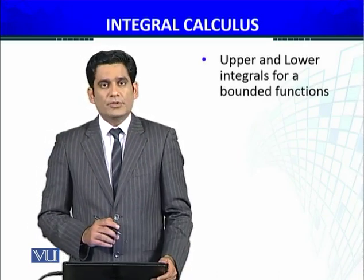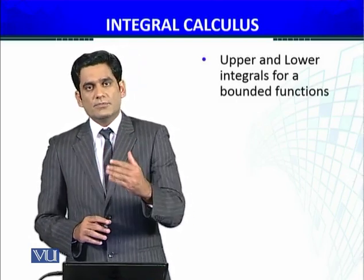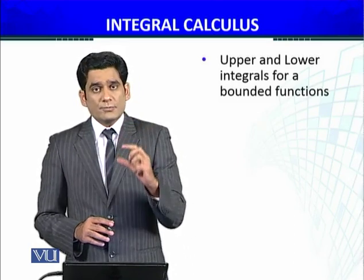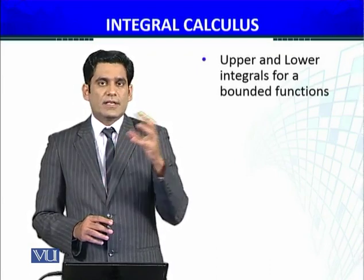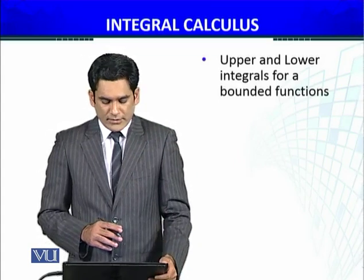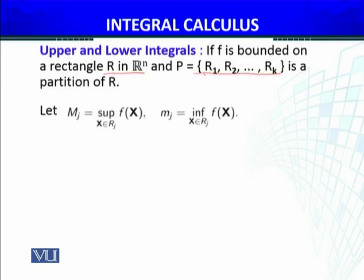So we are going to define the upper integrals and lower integrals. If F is bounded on a rectangle R in the Euclidean space R^n, and P is a partition of R, then we correspond to each sub-rectangle a maximum and minimum value.